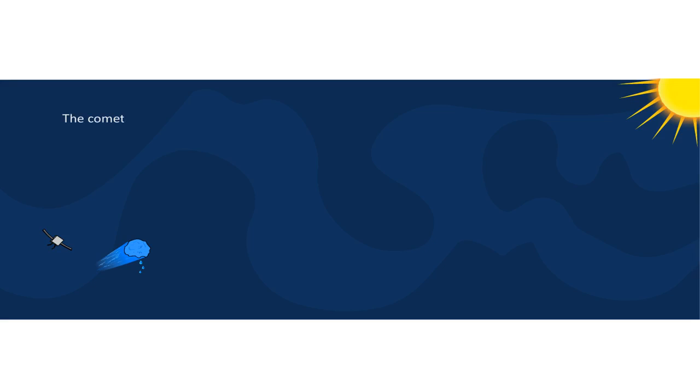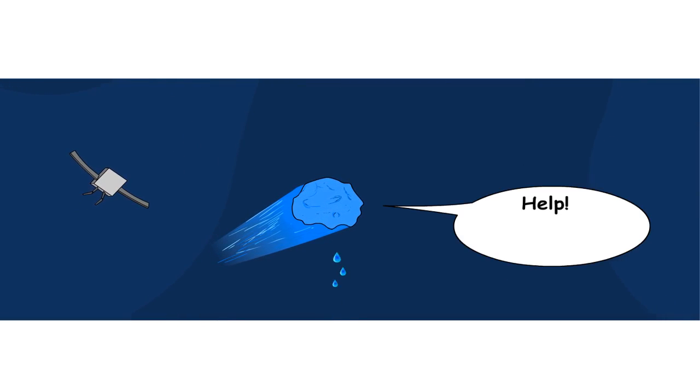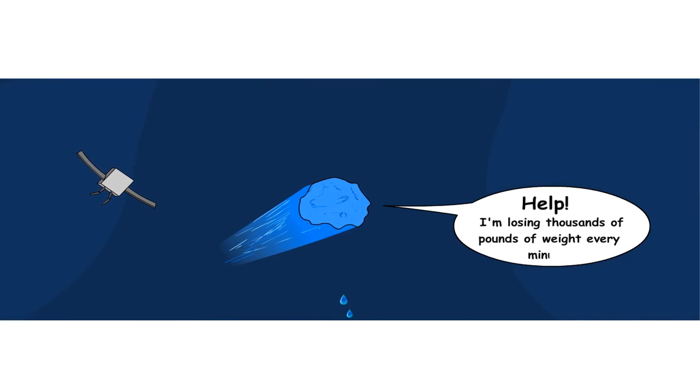The comet P67 was specially chosen as it was moving towards the Sun, melting its ice, allowing scientists to study it some more. 'Help! I am losing thousands of pounds of weight every minute.'